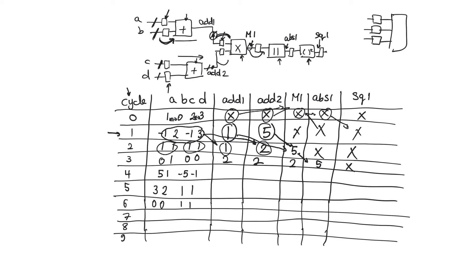The square circuit is still calculating rubbish. On the fourth clock edge, the next inputs become available to the adders, calculating one and zero, while new inputs become available to the multiplier, calculating an output of four. This two will go to the absolute circuit, calculating two, and the five will go to the square circuit, calculating 25.